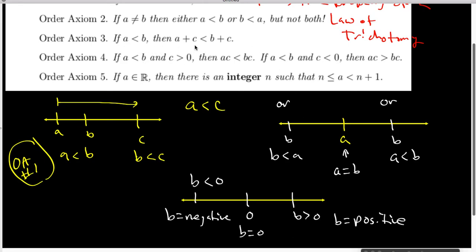The third axiom basically says that if I have an inequality, I can add the same number to both sides of that inequality. This is something that you should be familiar with from high school.